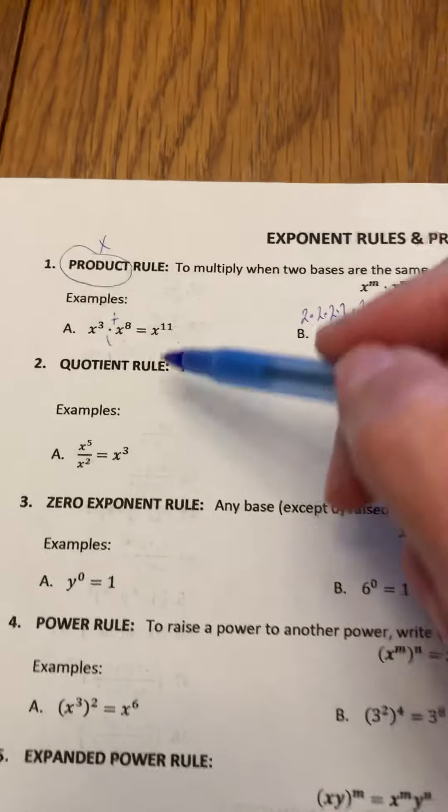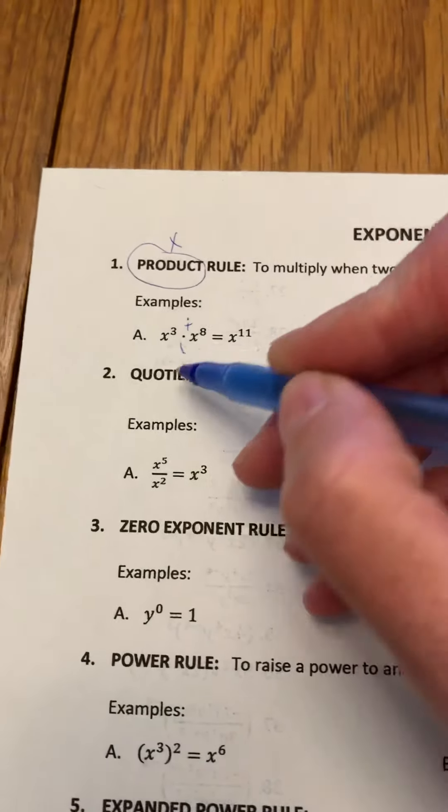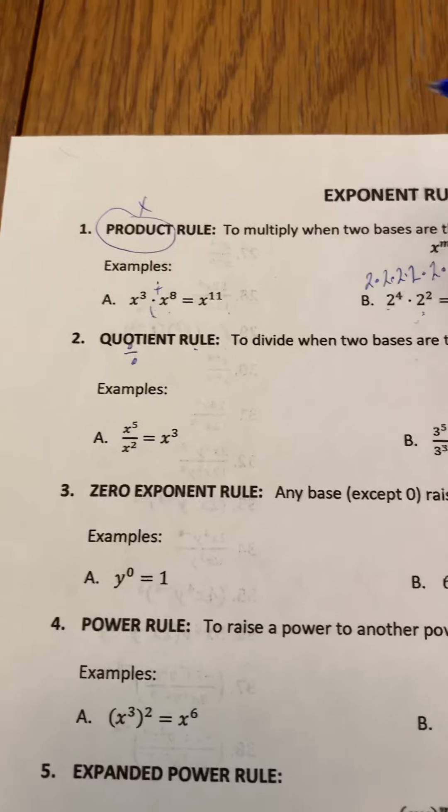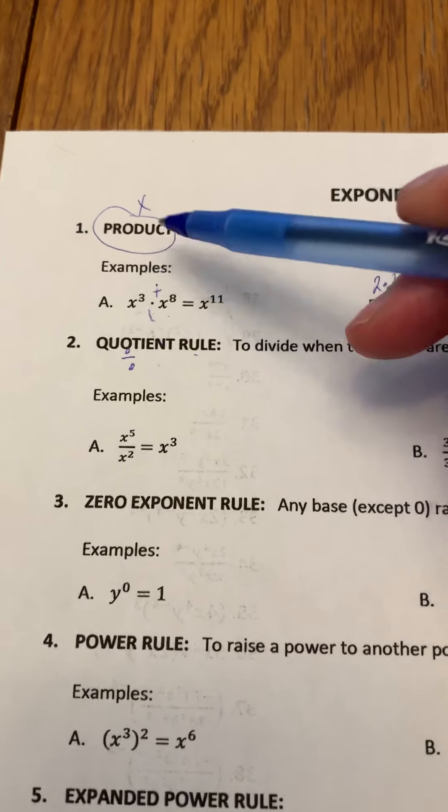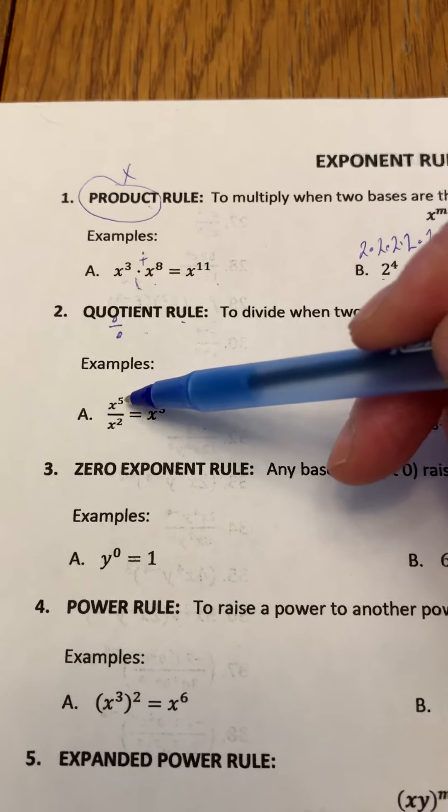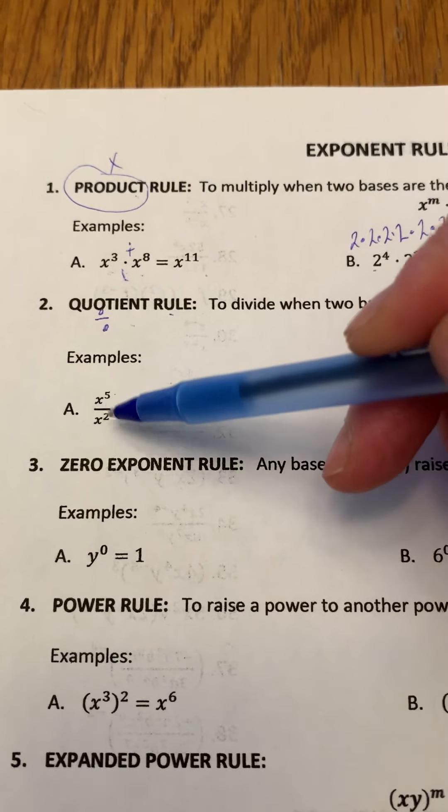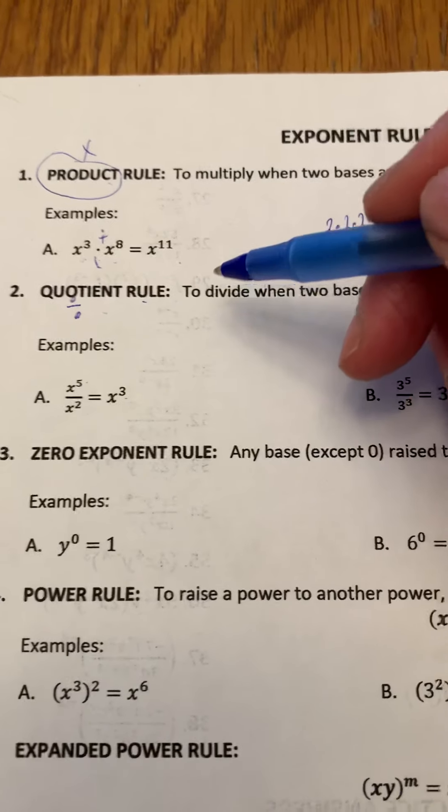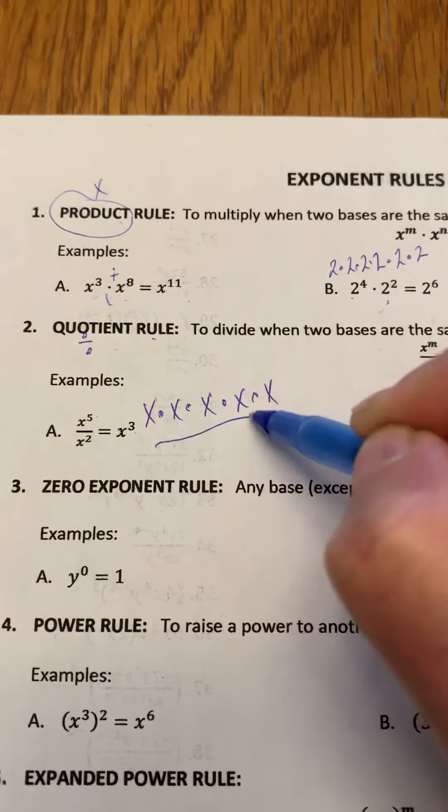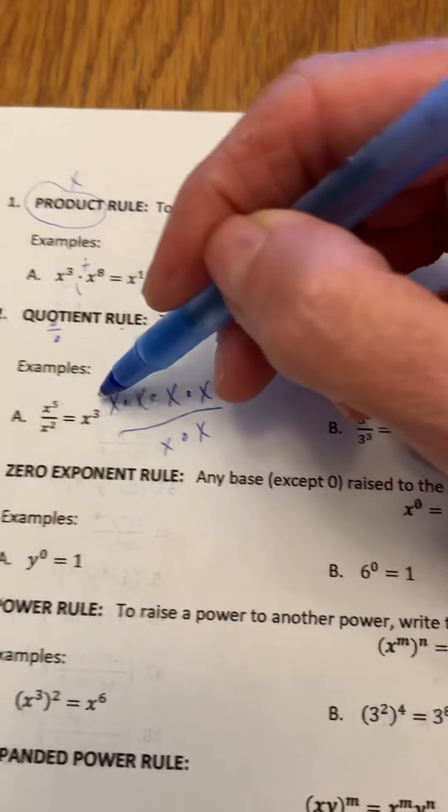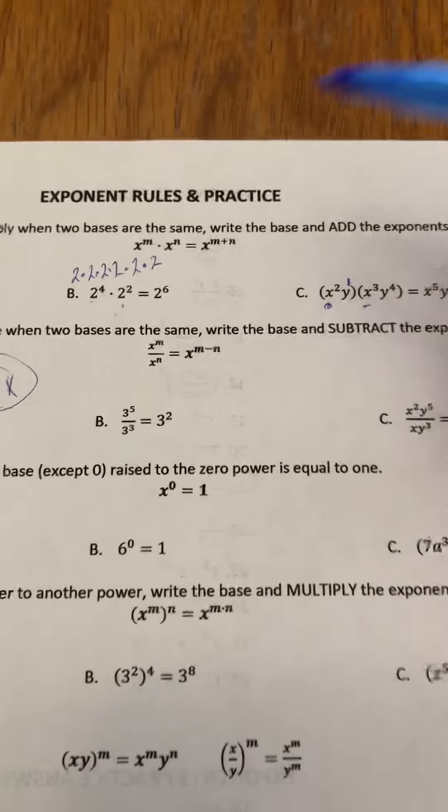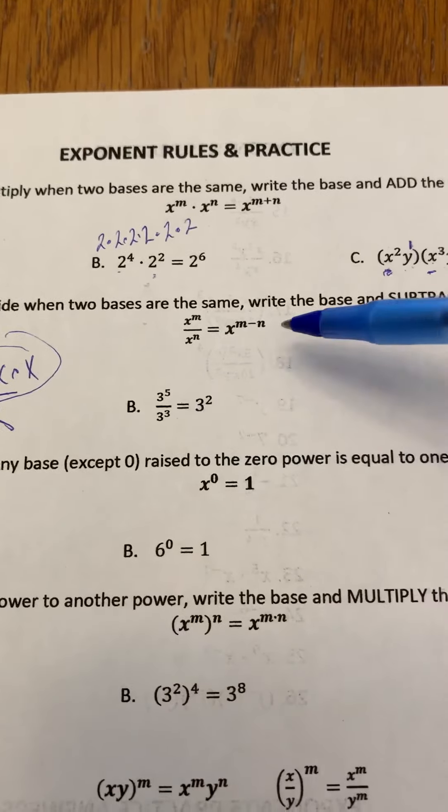The quotient rule comes into use when we are dividing. When we have bases that are the same, and because dividing is the opposite of multiplying, it makes sense that we are now going to subtract the exponents. So x to the exponent 5 divided by x squared becomes x to the exponent 3. I'm going to give you an example of why that works. If we had this, you could see that we could cross this out and this out, and we're left with x to the exponent 3, or x cubed.